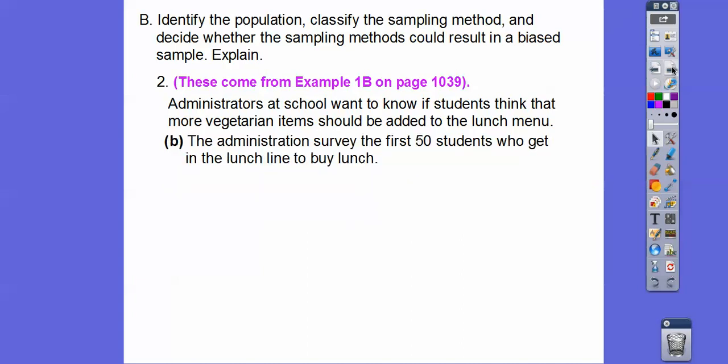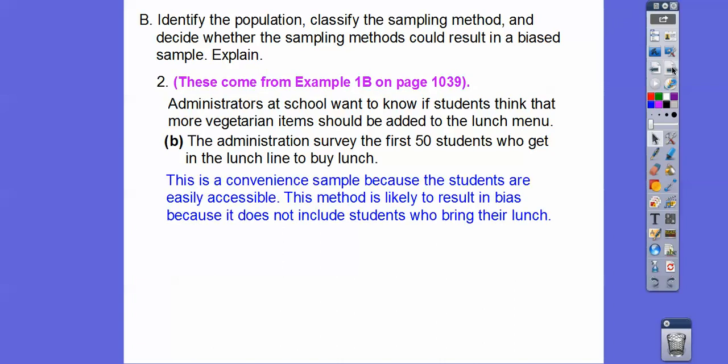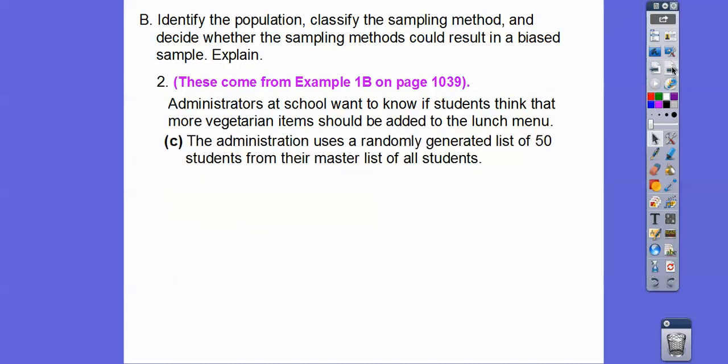How about this? The administrators survey the first 50 students who get in the lunch line to buy lunch. Well, this one is a convenient sample because the students are easily accessible. And this method is usually biased because in this case it doesn't include those students who bring their own lunches.